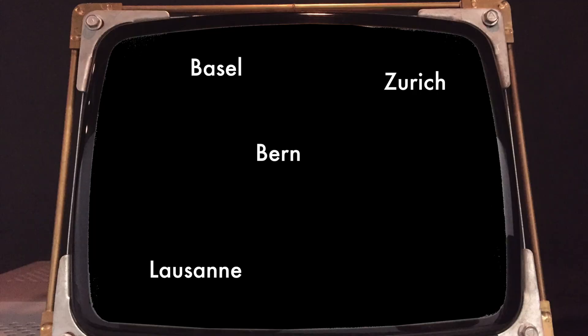So what's TSP? Given n cities, TSP is the problem of touring all cities and then getting back to the initial city, and you want your tour to minimise the total travelled distance.